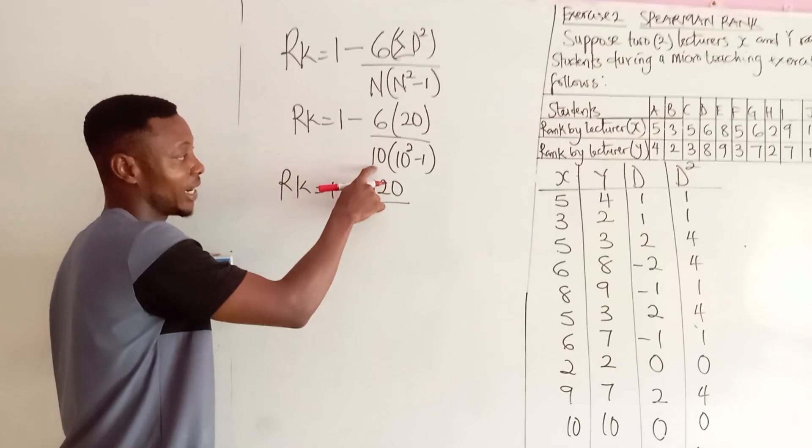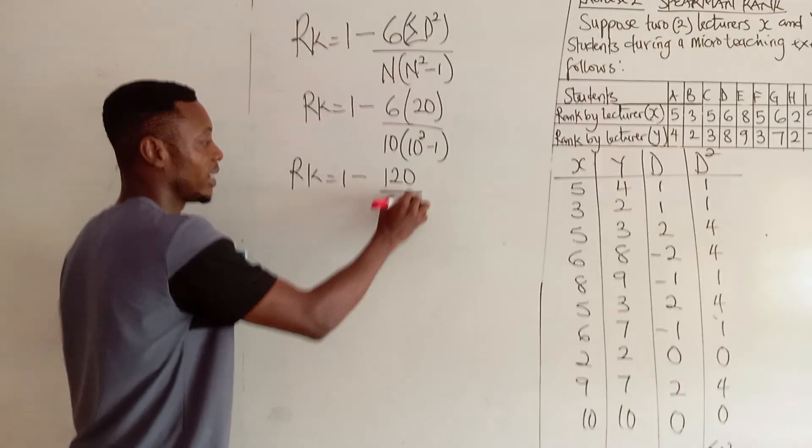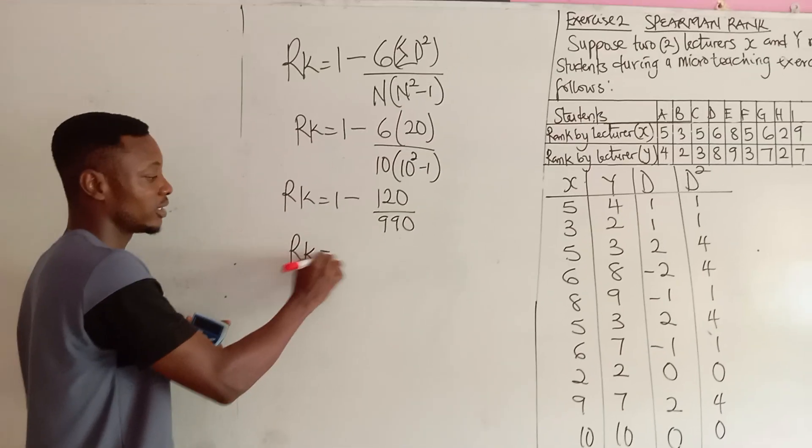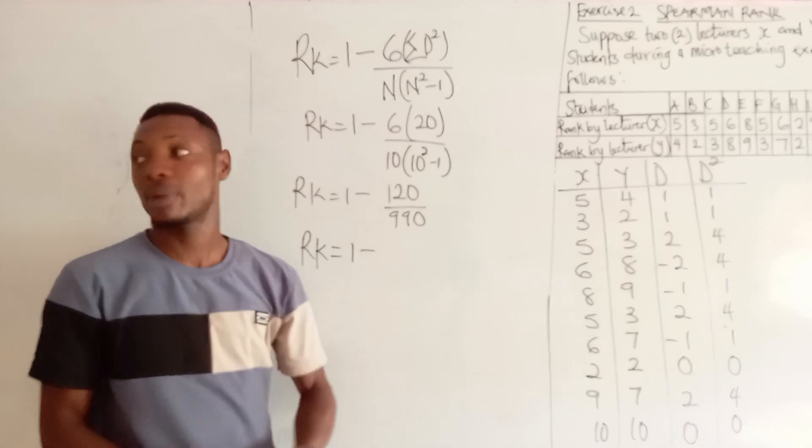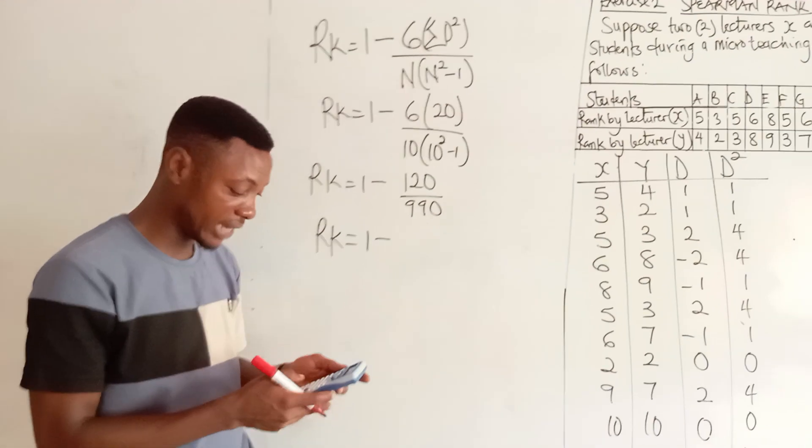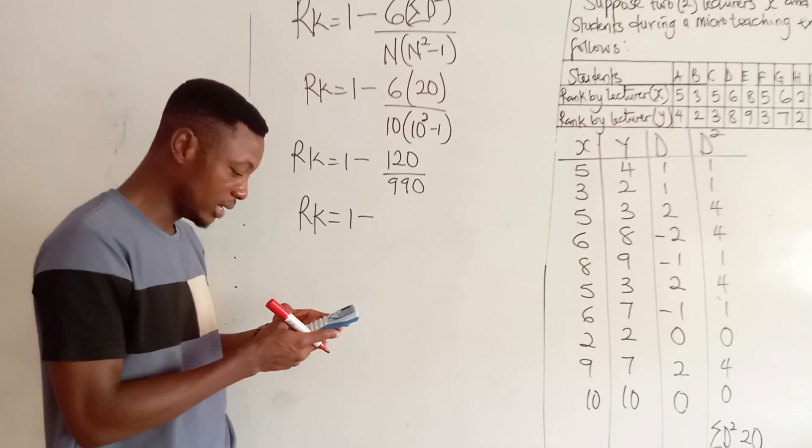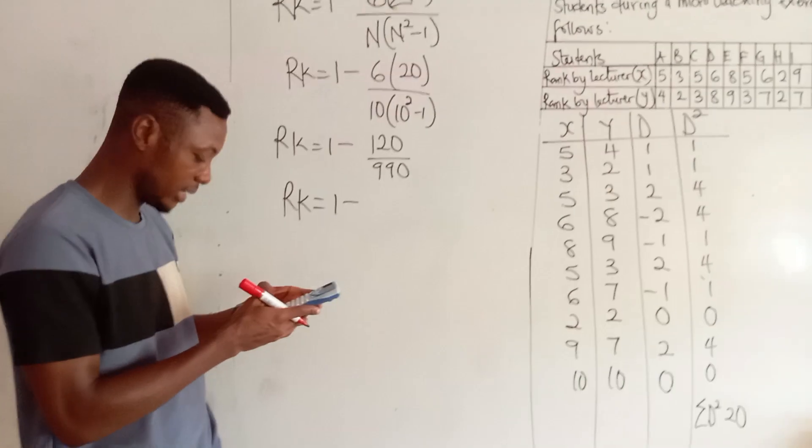99 multiplied by 10 will give me 990. So, this will give me rank is equals to 1 minus 120 divided by 990. So, I have 120 divided by 990.